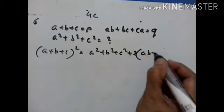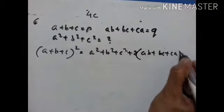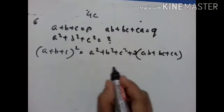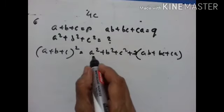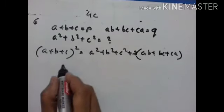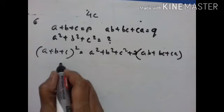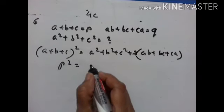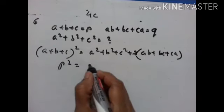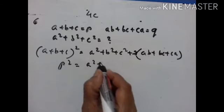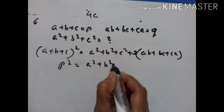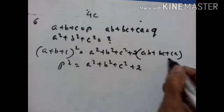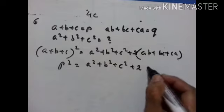Transposing 2q to the left: p square equals a square plus b square plus c square plus 2q, so a square plus b square plus c square equals p square minus 2q.